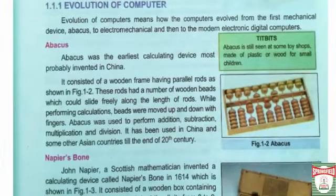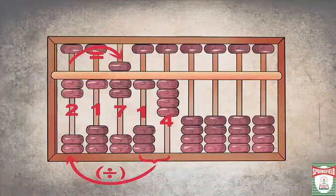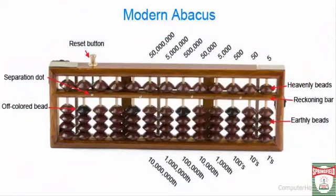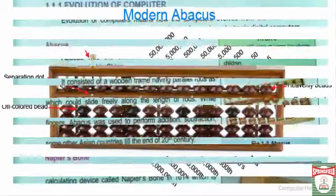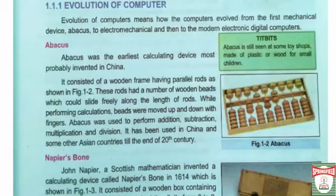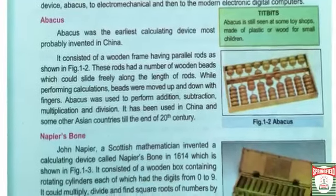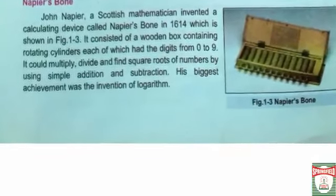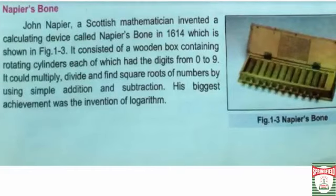Now we come to the second topic — evolution of computers. Evolution of computers means how computers evolved from the first mechanical device, the abacus, to electromechanical and then to modern electronic digital computers. The abacus was the earliest calculating device, most probably invented in China. It consisted of a wooden frame having parallel rods, and these rods have a number of wooden beads which could slide freely along the length of the rods. While performing calculations, beads were moved up and down with the fingers, and abacus was used to perform addition, subtraction, and multiplication.